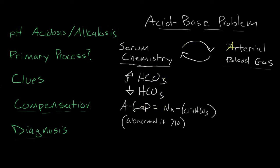Conversely, if you have an arterial blood gas value, that ABG will let you look at the pH and find out quite obviously if there is an acid-base disturbance. On the left, in green, I've outlined a stepwise process that I like to take, which systematically allows me to analyze every acid-base disorder. The first step is to look at your pH and determine if you're having an acidosis or an alkalosis.